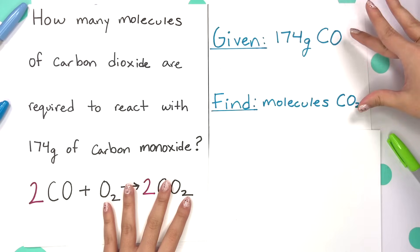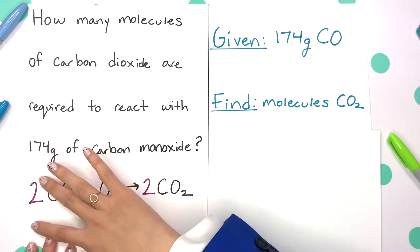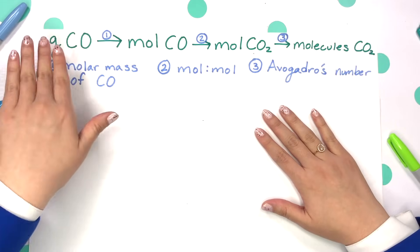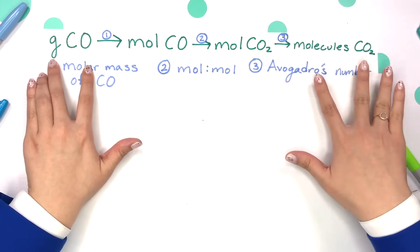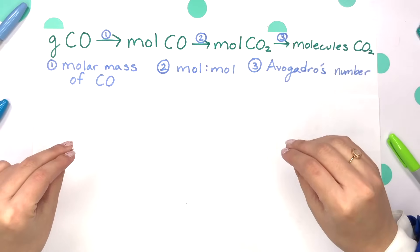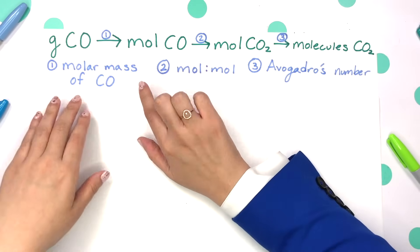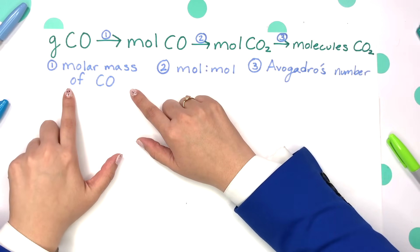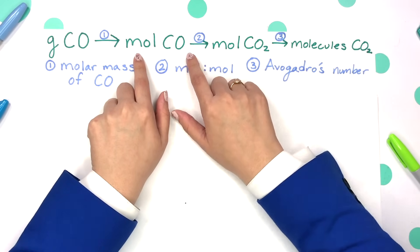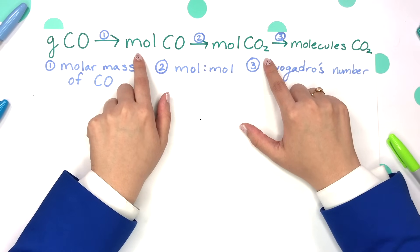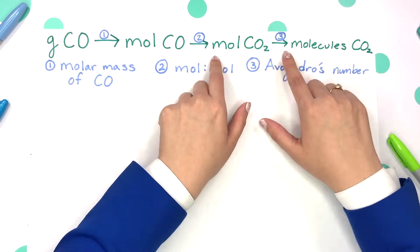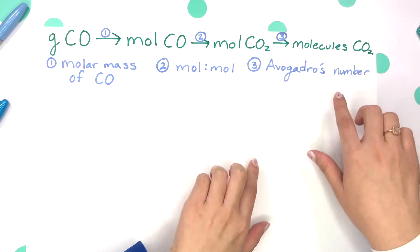Also, we're changing our compound, so we have to use a mole-to-mole ratio using the balanced equation. Setting up our plan, we're going from grams of CO and trying to get to molecules of CO2. We first convert to moles of carbon monoxide using the molar mass of carbon monoxide. Then we change our compound to moles of carbon dioxide using our balanced equation mole-to-mole ratio. Now at moles of CO2, we convert to molecules using Avogadro's number.